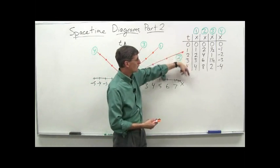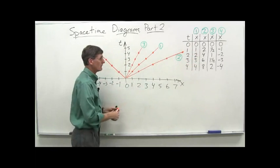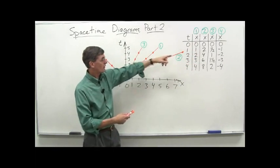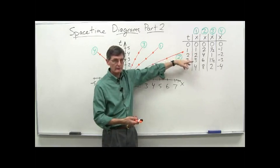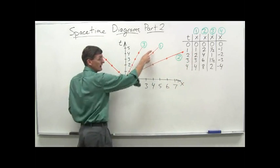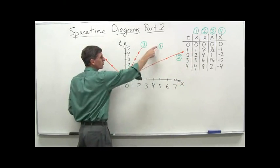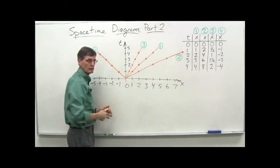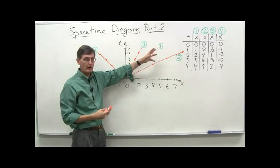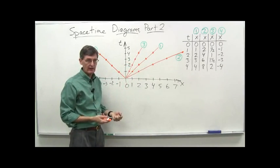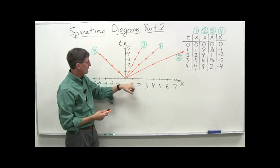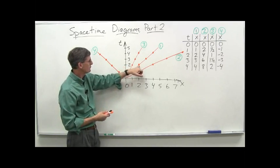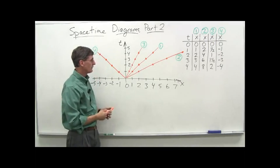Run one starts at x equals zero. Then at t equals one, it's at x equals one; t equals two, x equals two; and so on. This is the world line for run number one of our spaceship. At t equals one it's at position one, at t equals two it's at position two, at t equals three it's at position three, and so on.